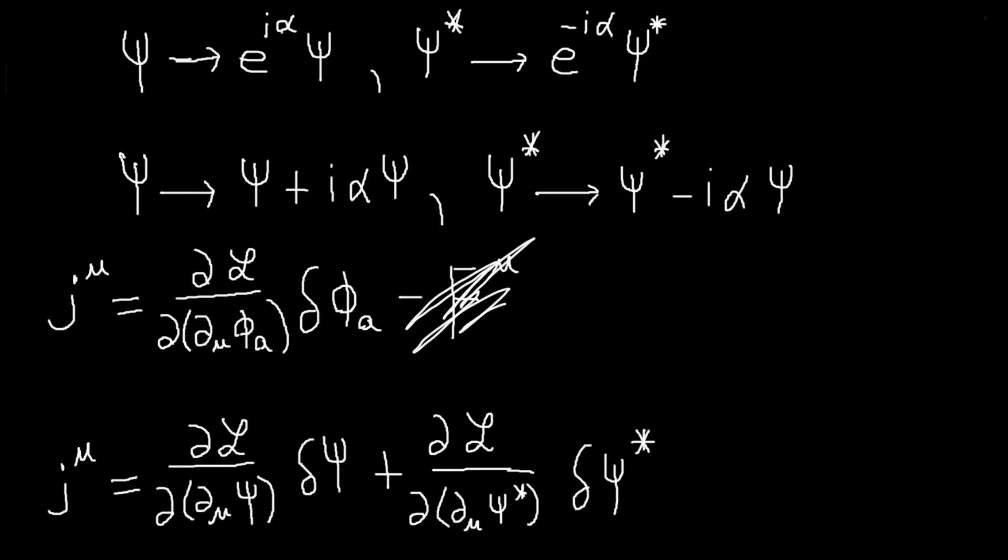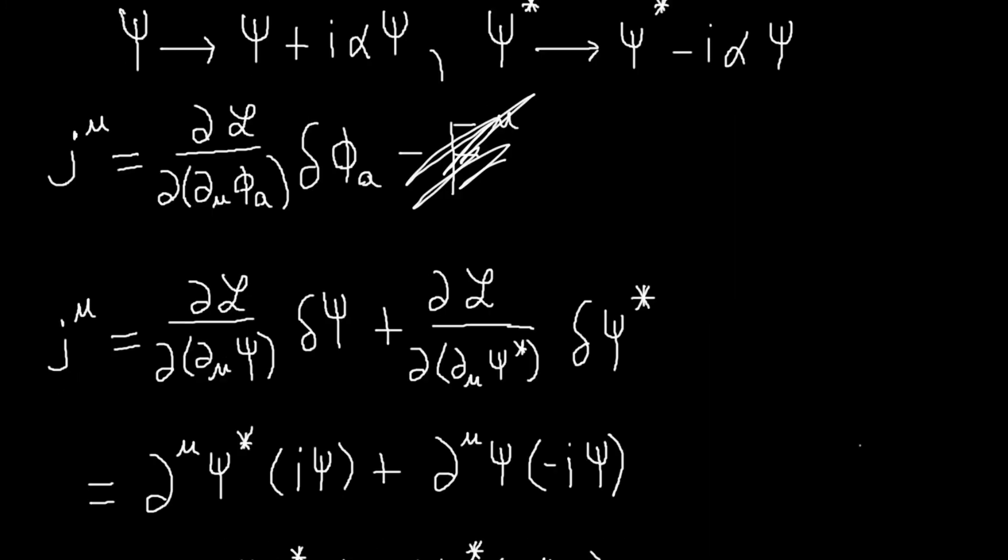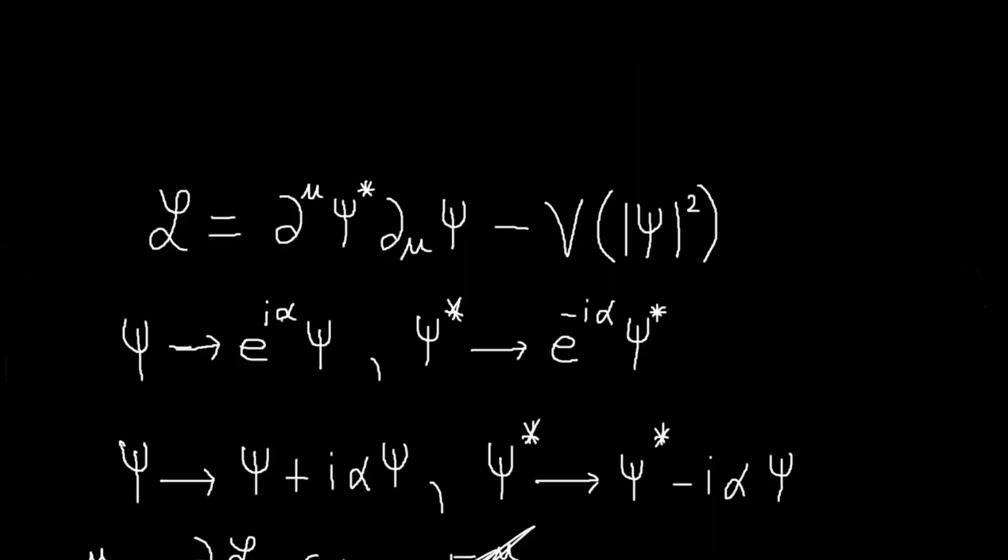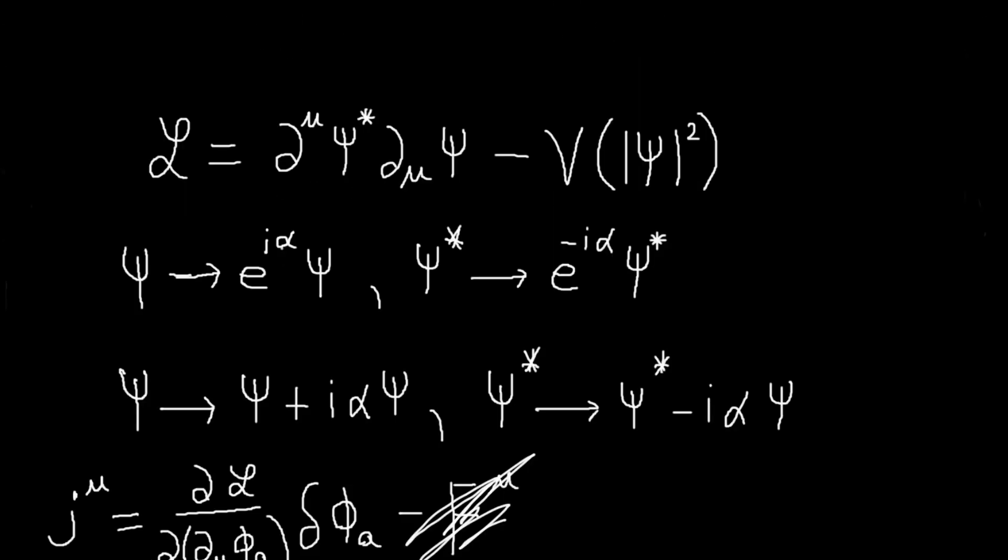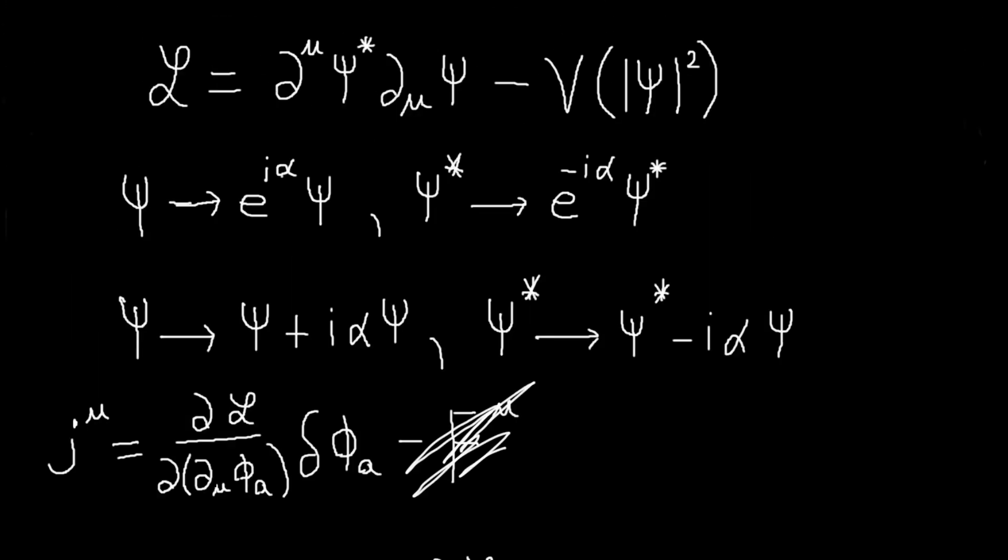So we just need to calculate these things. So here I've just summed over our field. So we'll have these two terms. And this is very easy to calculate. So dL d d mu psi. So doing those derivative terms is very easy because again, psi and psi star are independent. So if we're taking the derivative with respect to d mu psi here, we can treat this as a constant. So that will immediately see that that will be this d upper mu psi star.